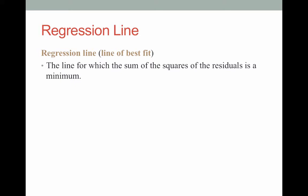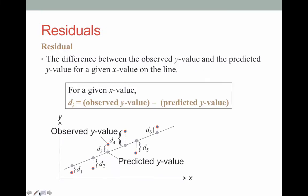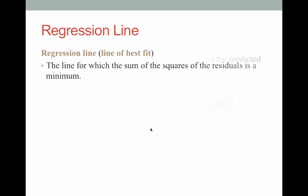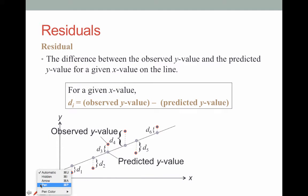A regression line can also be referred to as a line of best fit — it's the line that best fits our data. It is the line for which the sum of the squares of the residuals is a minimum. So if I take each of these residuals — d1, d2, d3, d4, d5, and d6 — square them and add them all up, our regression line is the one that minimizes that value.